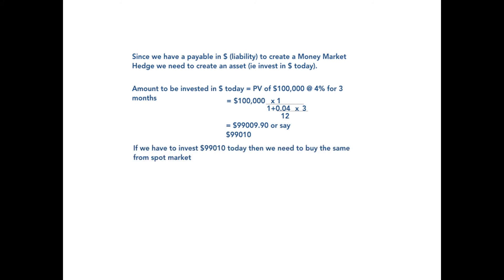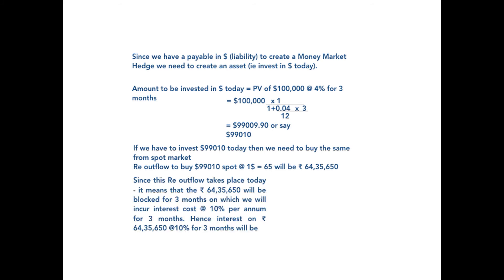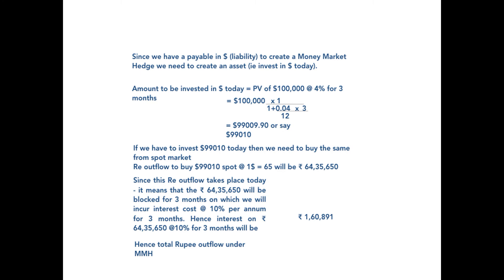So we need to buy $99,010 today, which at the spot rate of $1 equals ₹65 will result in an outflow of ₹64,35,650. But we cannot conclude that this is the total outflow to settle the payable, since we will be incurring interest cost on ₹64,35,650 which is blocked today at 10% per annum for three months, and this interest totals to ₹1,60,891. Hence the total outflow of rupees if we undertake the money market hedge will be ₹64,35,650 plus the interest thereon at 10% per annum for three months, amounting to ₹1,60,891, resulting in a total outflow of ₹65,96,541.